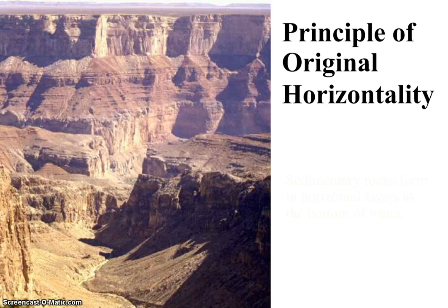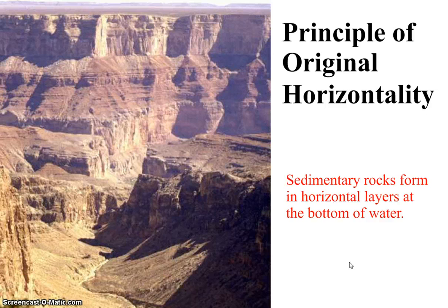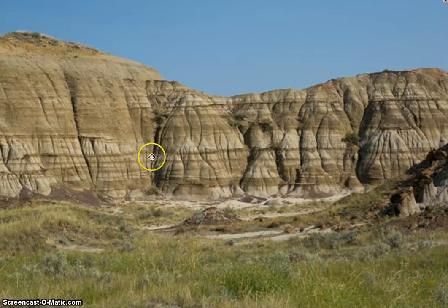In our last unit we learned how sedimentary rocks are formed at the bottom of water in horizontal layers. This is the basis for how we know the Earth is changing. There's a principle called original horizontality, which says that sedimentary layers of rock originally form in horizontal layers. When you look at the Grand Canyon you can still see those rocks in horizontal layers, and I took this picture in Glacier National Park in Montana where you can see horizontal rocks as well. This picture from Canada also shows horizontal layers of sedimentary rock.